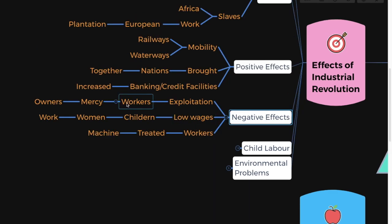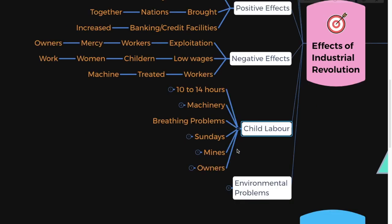Workers were at the mercy of their owners, so owners could treat their workers whatever way they wanted to. Wages and salaries were very less, so even women and children had to work. Workers were not treated like humans — they were treated like machines, made to work constantly. Another negative effect was child labor: a child had to work about 10 to 14 hours a day with very minimum breaks.